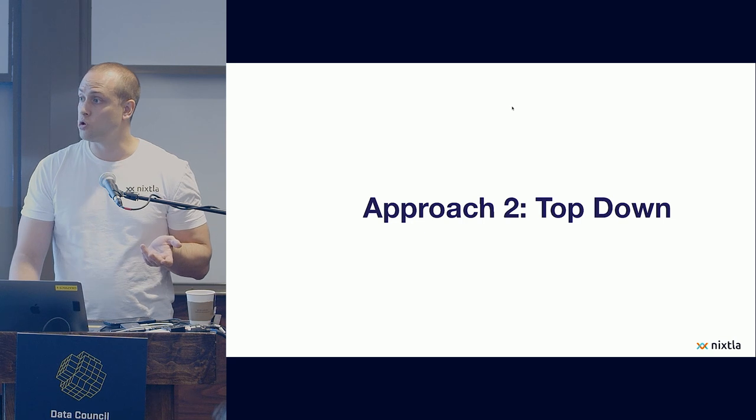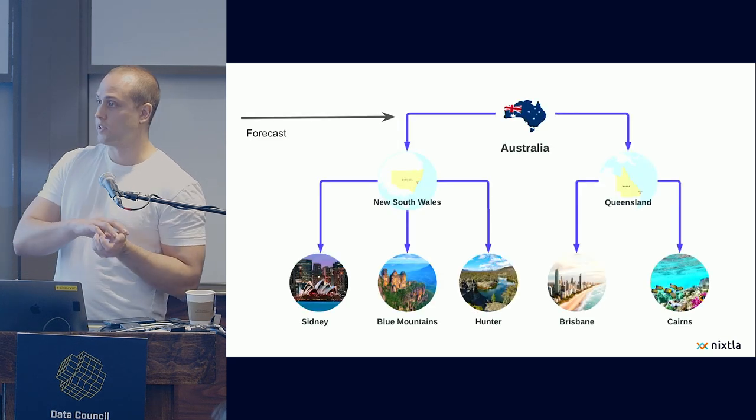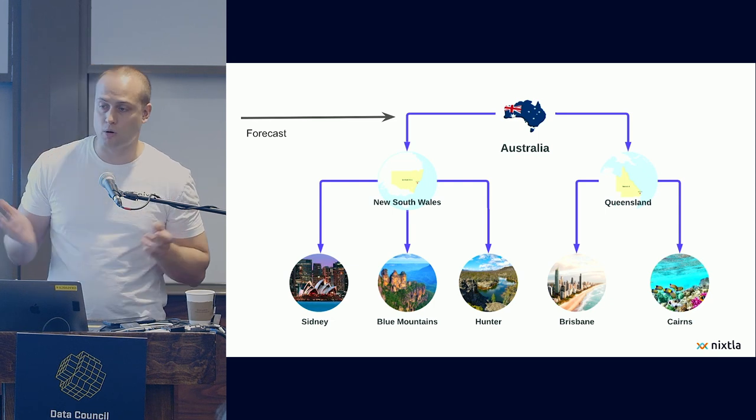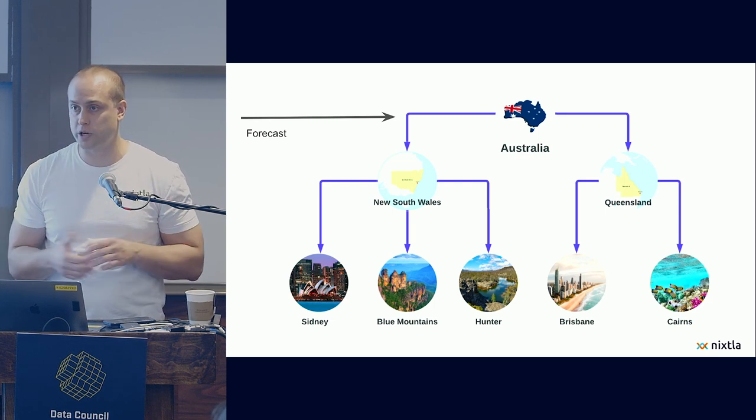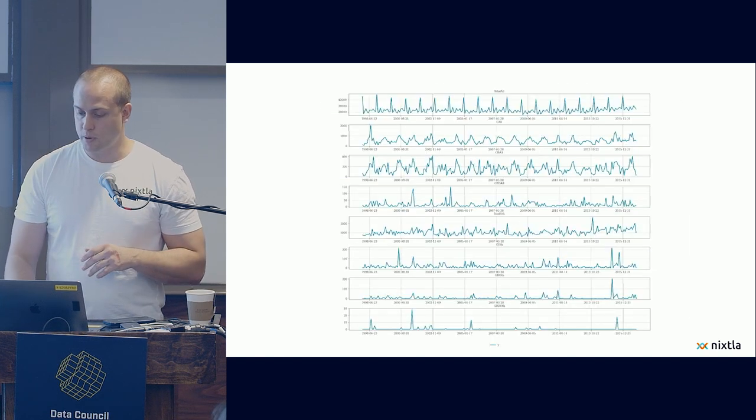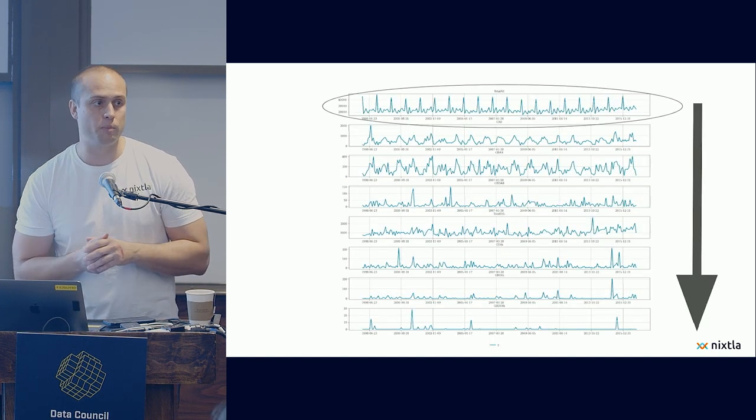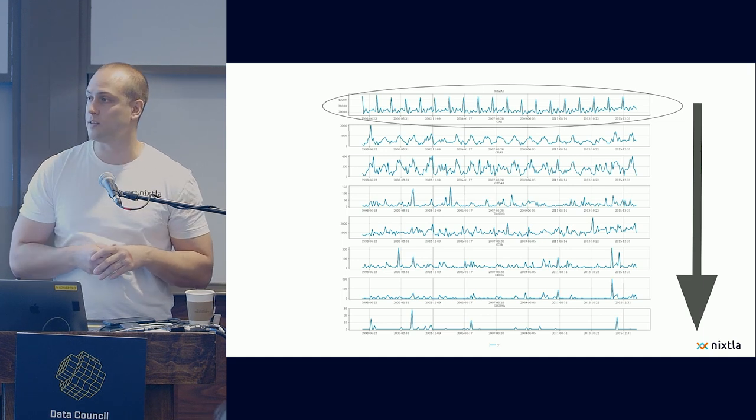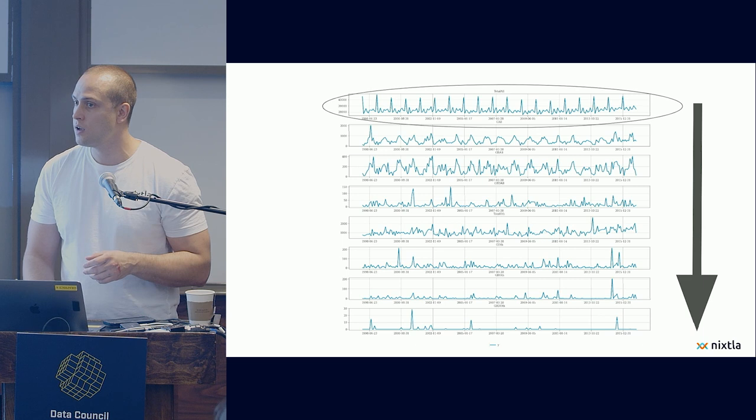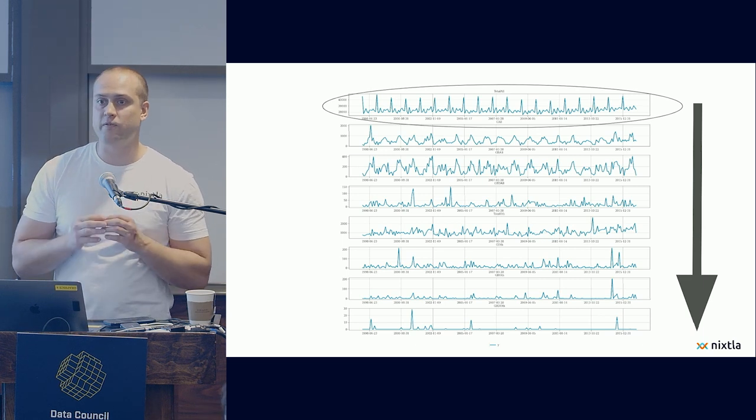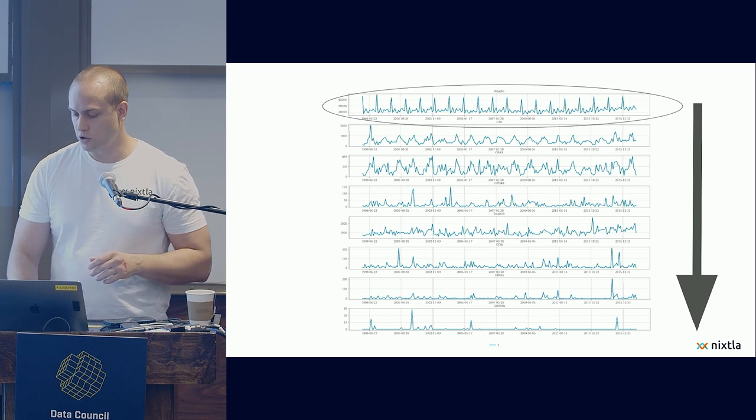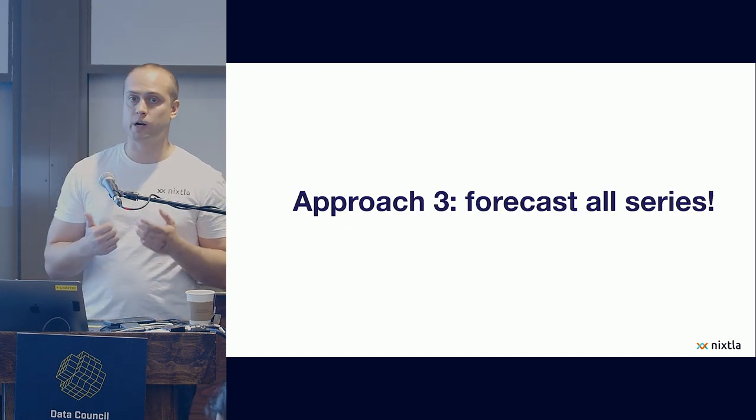You could then do top-down. You could try to forecast the whole of Australia, and then by some weight, maybe country size or total shares of tourism, divide them for each of the different regions. The problem here is that, yes, the top series is well-behaved in the sense that it has clear patterns of seasonalities and trends, but you're going to miss very important information of the lower series. So that doesn't really work neither.